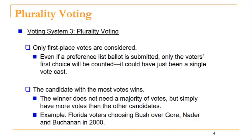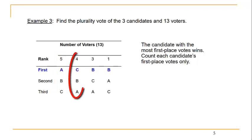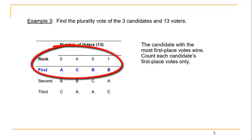For example, in the 2000 election, Florida voters chose Bush over Gore, Nader, and Buchanan because he received more votes. Here's an example of an election with three possible candidates — A, B, and C — and 13 voters. Five voters have candidate A as their first choice, candidate B as their second choice, candidate C as their third choice, while four voters have candidate C as their first choice, candidate B as their second choice, candidate A as their third, and so forth. The candidate with the most first place votes wins. A receives five first place votes, B receives four, and C also receives four. Since A received the most first place votes, A wins this election.